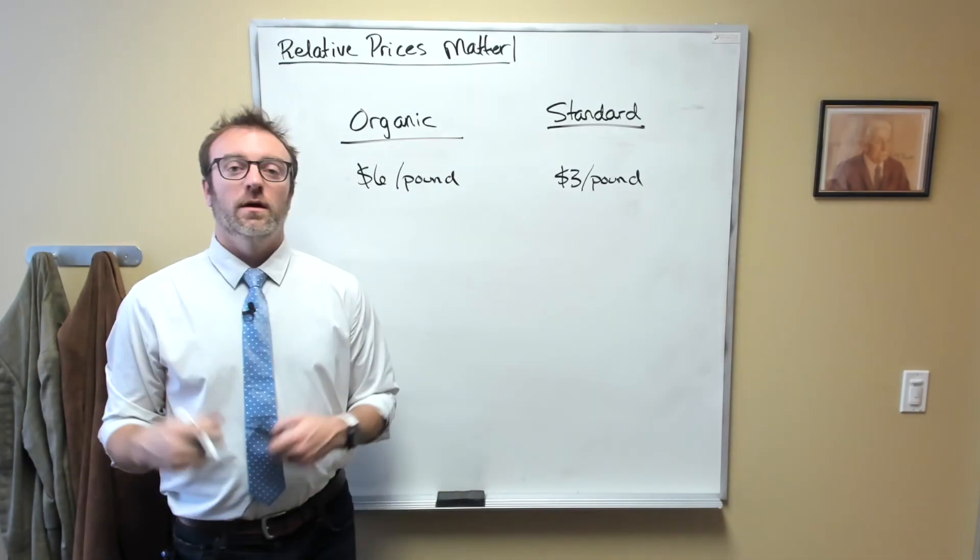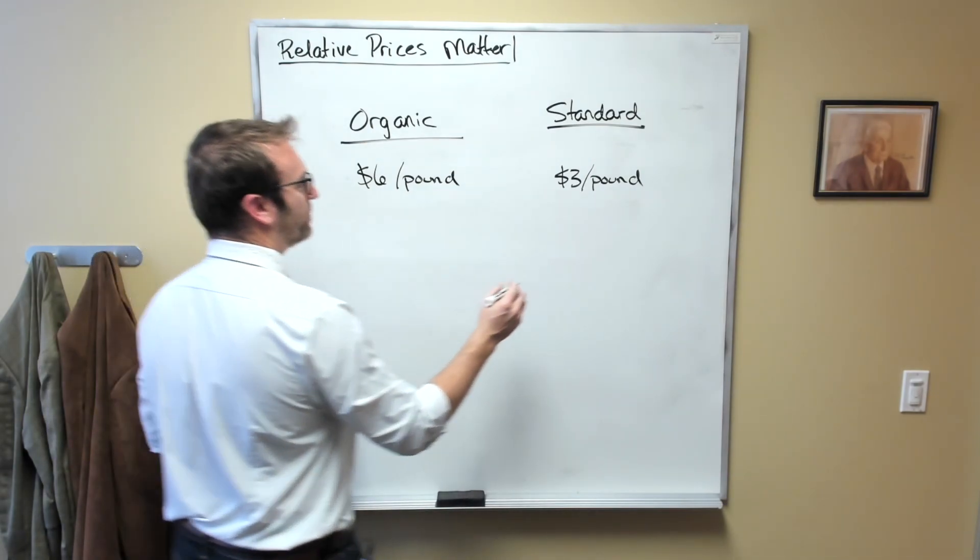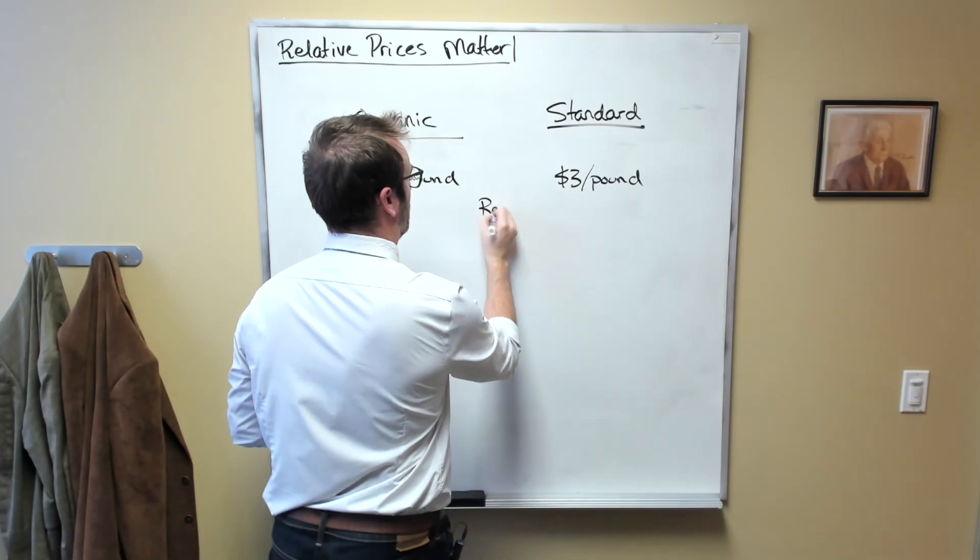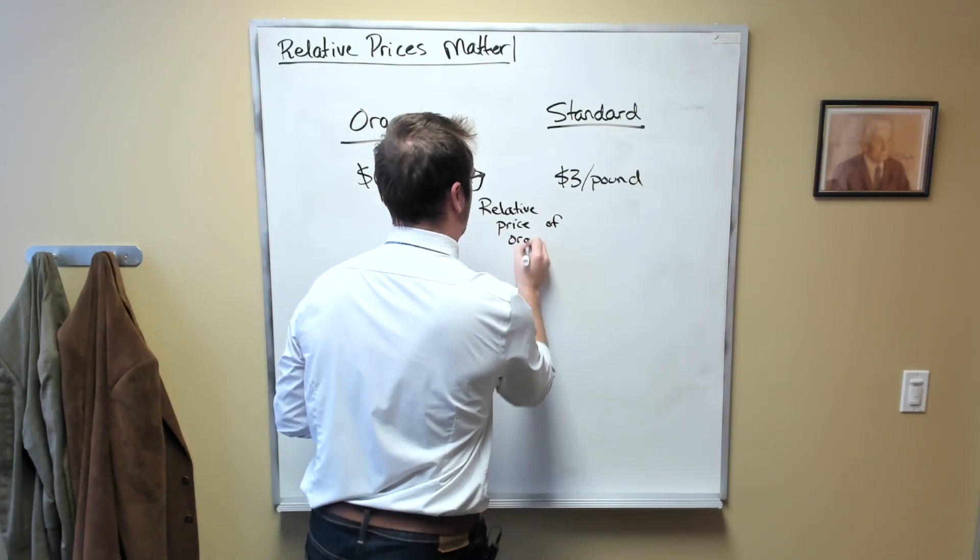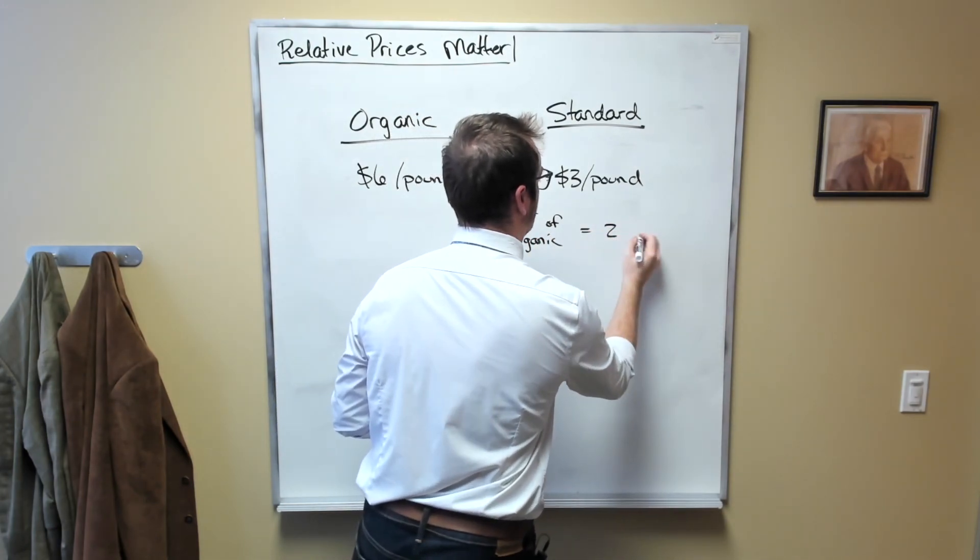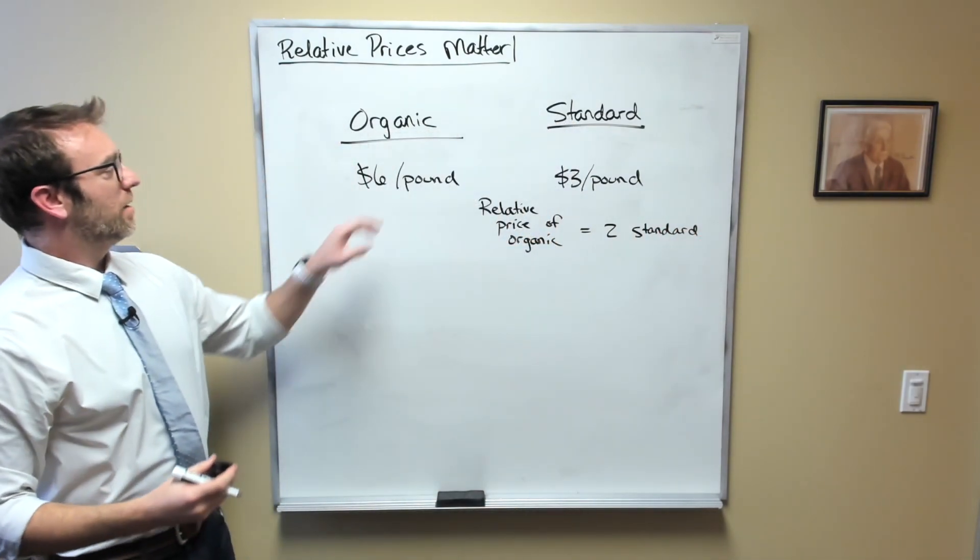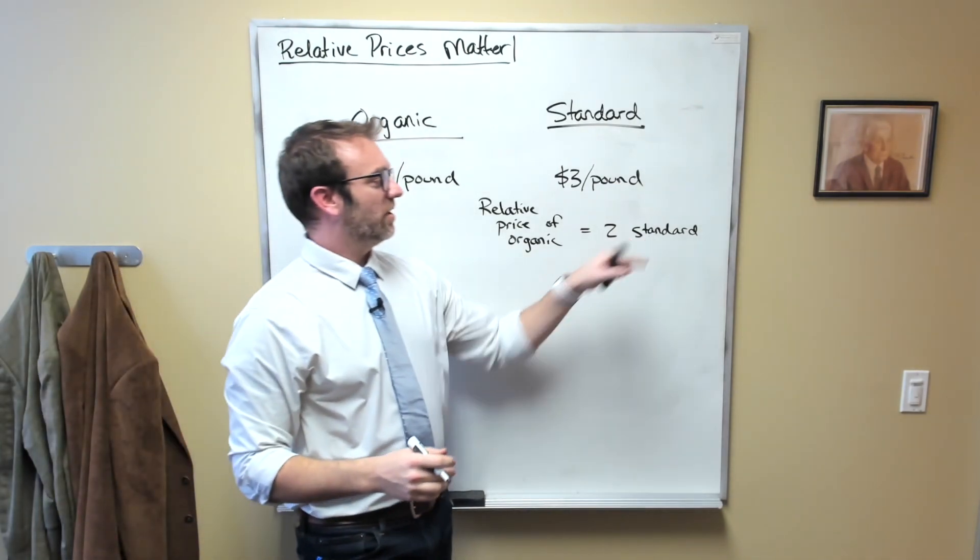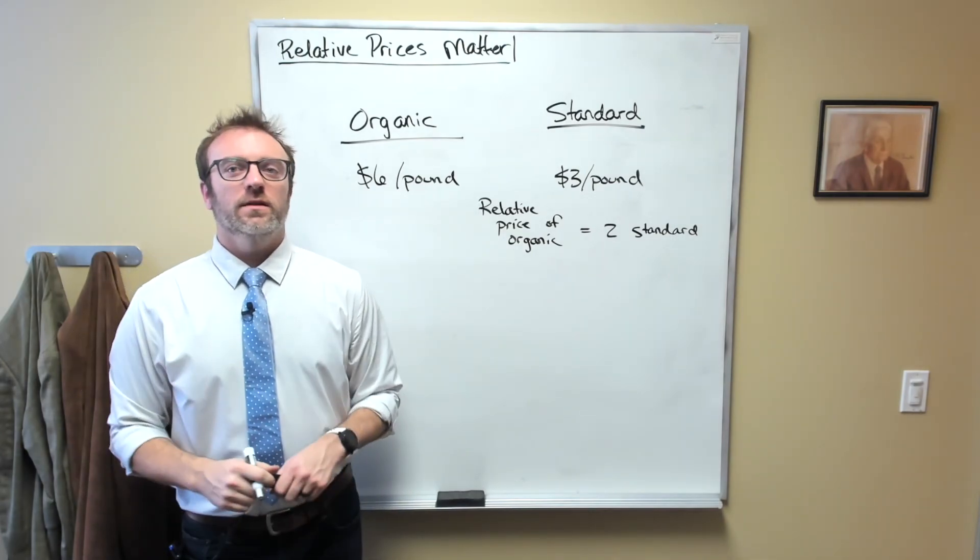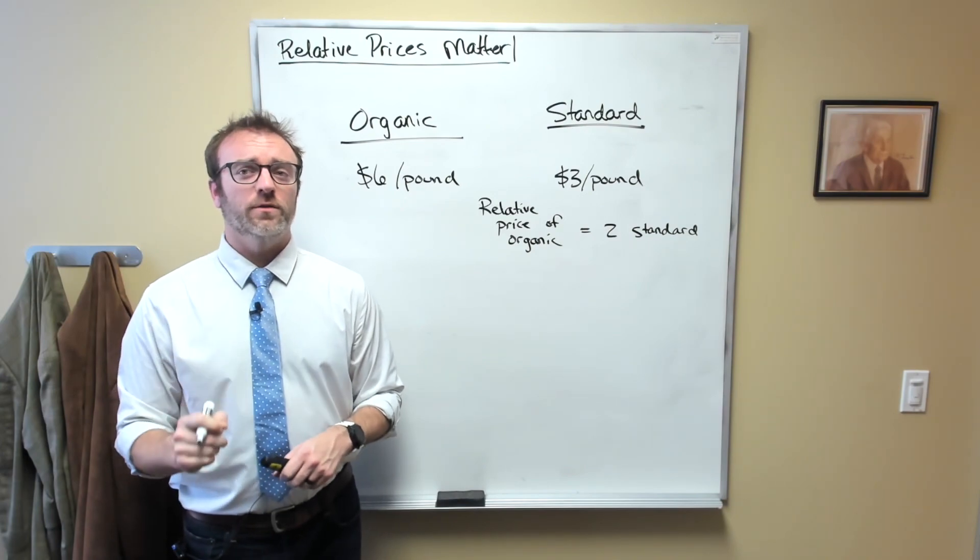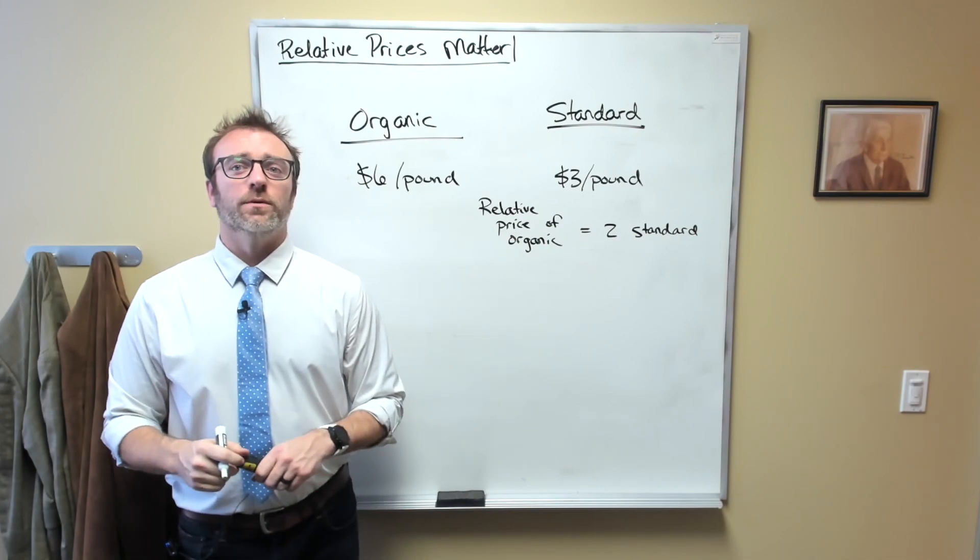Let's do this in an example. To see how this works, let's consider our apple market. Remember, we said the relative price of organic was equal to 2 standard. In other words, for every pound of organic apples you purchase, you give up the opportunity of purchasing 2 pounds of standard apples. Let's suppose it costs $2 to ship a pound of apples, whether organic or standard, from where they are grown to where they are consumed.